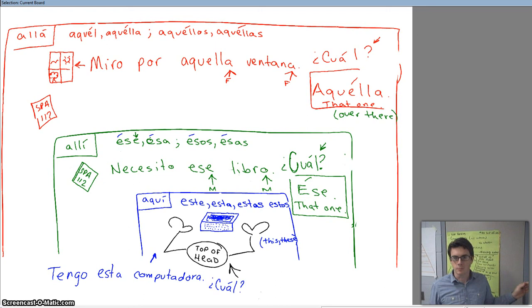So now you're down here at the bottom statement. Tengo esta computadora. And let's say your classmate says, which one? Which computer is it that you have? Well, what is going to be your answer? Take a look at it. It is singular. It is feminine. What's it going to be? Very good. It's going to be ésta, meaning this one, right here, the one that's right here beside me.